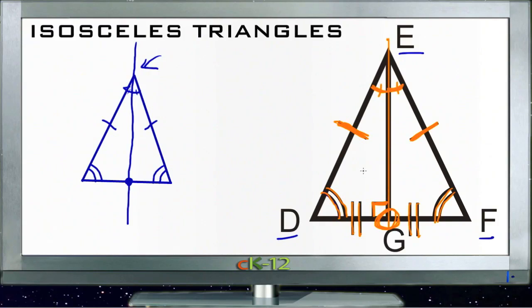Let's take a look at how these identifiers of an isosceles triangle work for the example questions. If you scroll on down to the bottom of the page here, you'll see the next video where we go through these example questions one at a time.